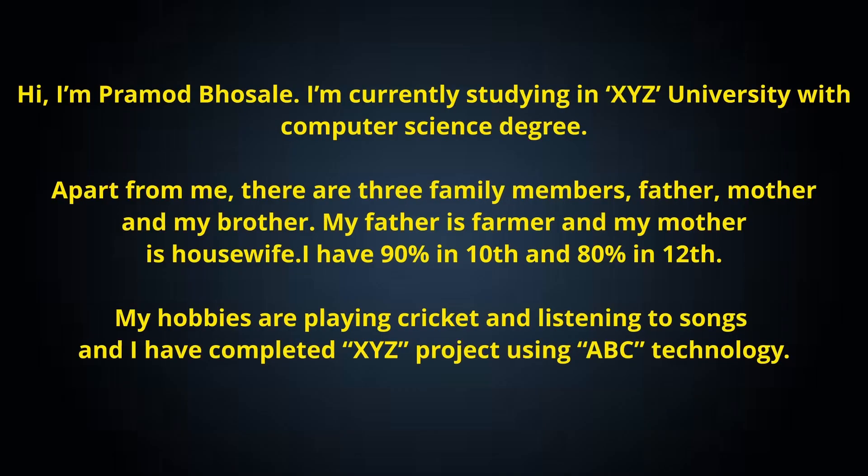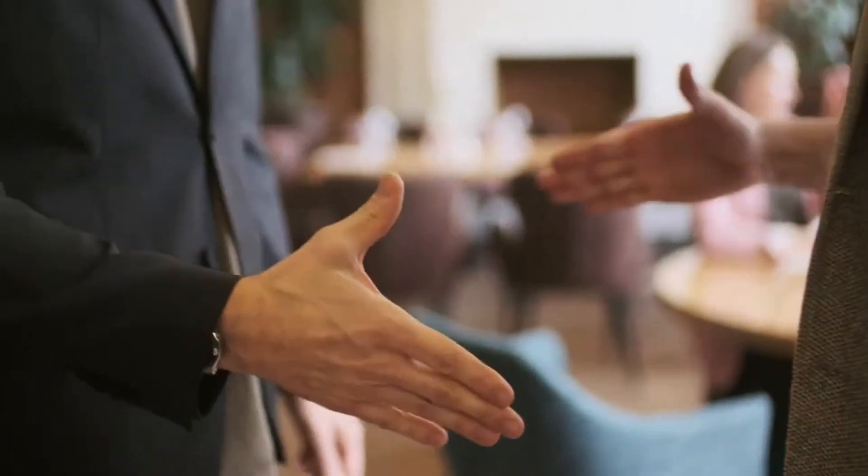Now let's look at what the wrong answer mainly looks like. Hi, I'm Pramod Bosle. I'm currently studying in XYZ University with a Computer Science degree. Apart from me, there are three family members — father, mother, and my brother. My father is a farmer and my mother is a housewife. I have 90% in 10th and 80% in 12th. My hobbies are playing cricket and listening to songs. From this answer, you might have guessed how boring this is, since it mentions all unnecessary and unwanted things. Do you really think this answer will create some kind of impact on the interviewer? No, really no. And most students — nearly 90 to 95% — give the same answer to the interviewer.